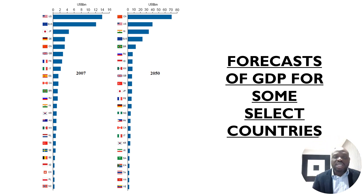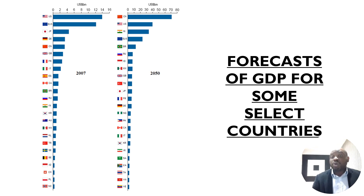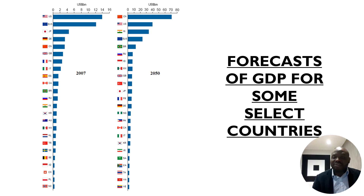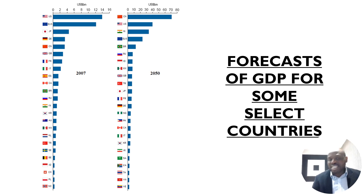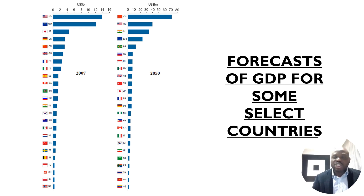GDP forecasts for selected countries suggest that by the middle of this century there could be a significant change in the global economic environment. Countries in Asia, Africa, and Latin America should be doing much better in terms of GDP. The makeup of the world in terms of economic dominance could change substantially by 2050.